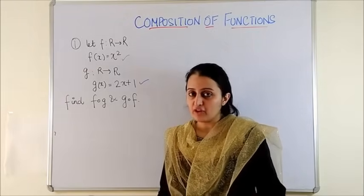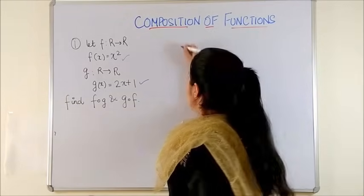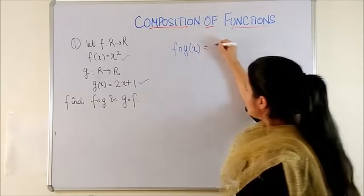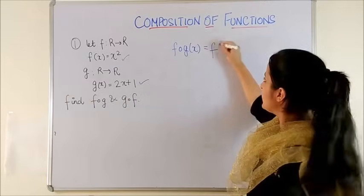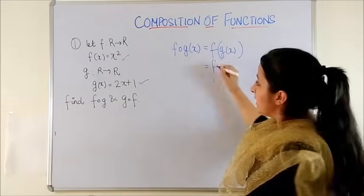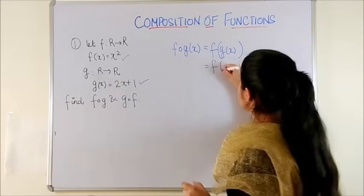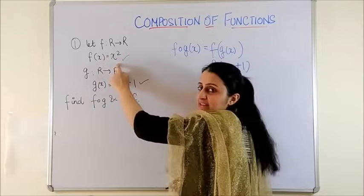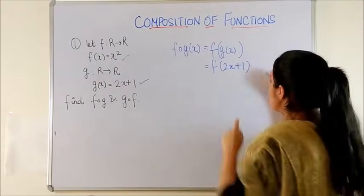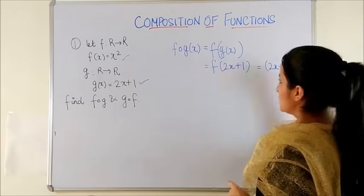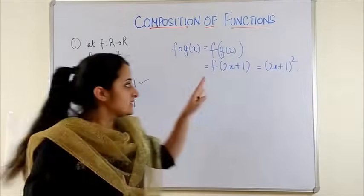Beginning with F of G, let's say I take x, it is the same as saying applying F to your Gx. In place of Gx we have 2x plus 1. Now if F of x is x squared, then F of 2x plus 1 becomes 2x plus 1 whole square.